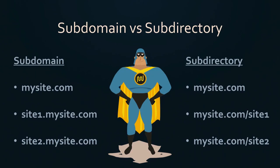When you first enable WordPress multisite, the first thing it asks is: do you want sub-domain or sub-directory? A lot of people don't really understand the difference. With sub-domain, your main site is like mysite.com, and when a sub-site is created it will be site1.mysite.com, site2.mysite.com, et cetera. With sub-directory, it's kind of the opposite — the site name comes afterwards in the directory name. A lot of people love sub-domain because it looks clean.